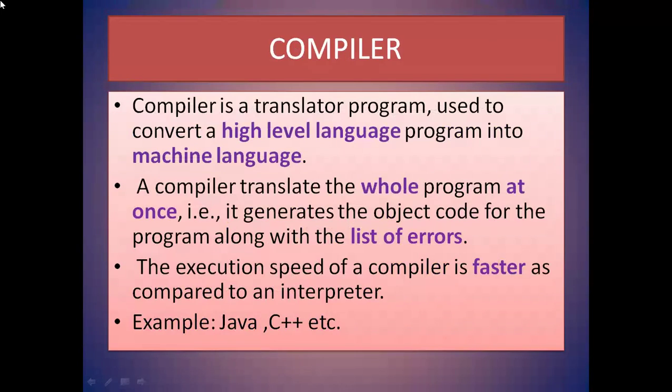Next is compiler. Compiler is a translator program used to convert a high-level language program into machine language. A compiler translates the whole program at once. That is, it generates the object code for the program along with the list of errors. The execution speed of compiler is faster as compared to an interpreter. Java, C++, etc. are examples of languages where we use compiler to compile our program.